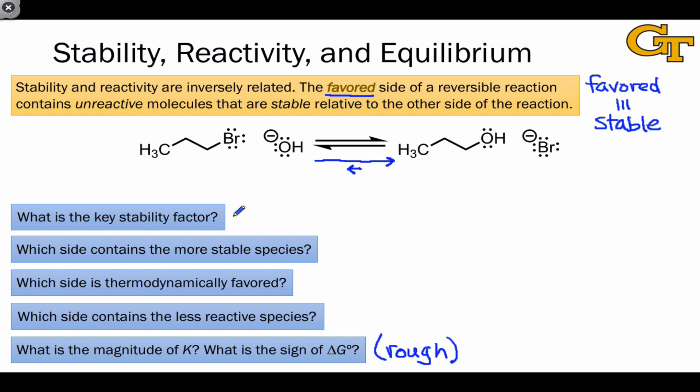In this case, the key stability factor is electronegativity. Which side contains the more stable species? The side with negative charge on the more electronegative atom—the products. Which side is thermodynamically favored? Well, favored and stable are synonymous terms. The product side is more favored.